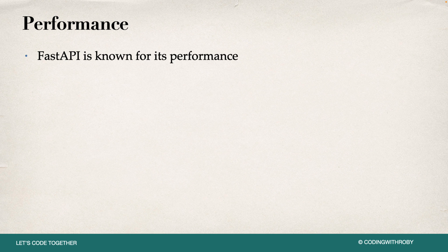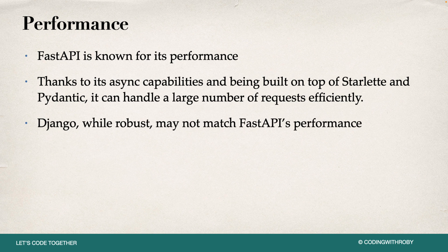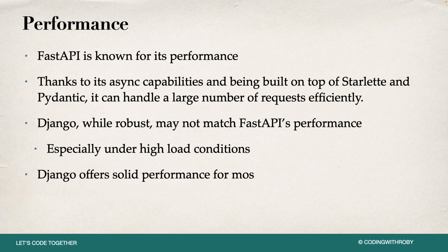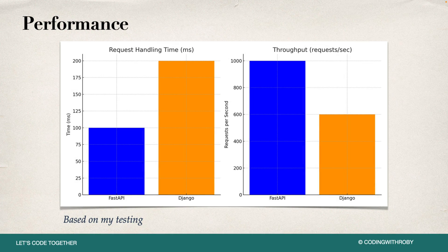Let's talk about performance a little more. FastAPI is known for its performance overall, thanks to its async capabilities and being built on top of Starlette and Pydantic — it can handle a large number of requests efficiently. Django, while robust, may not match FastAPI's performance overall, especially under high load conditions, though it offers solid performance for most applications. FastAPI does kick Django's butt when comparing against traditional synchronous views — FastAPI is significantly quicker. Testing shows the request handling time is significantly longer in Django than FastAPI, and throughput is significantly faster in FastAPI.